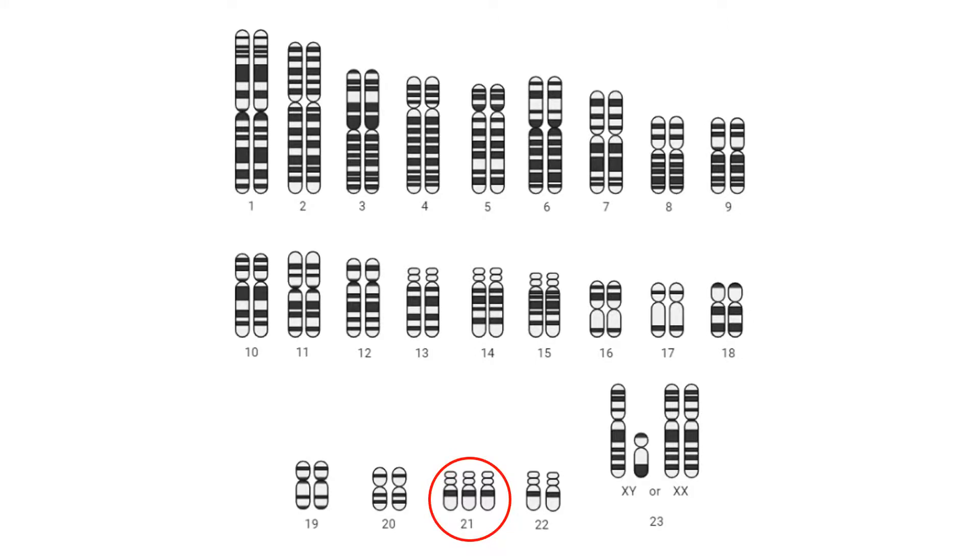Although non-disjunction in meiosis 1 is a lot more common than meiosis 2, both can result in abnormal zygotes. Moreover, non-disjunction is more common in female gametes. However, regardless of maternal or paternal origin, an abnormal gamete will result in an abnormal zygote.